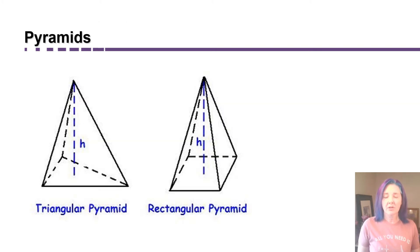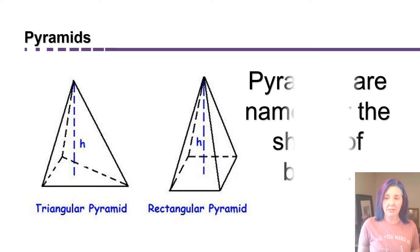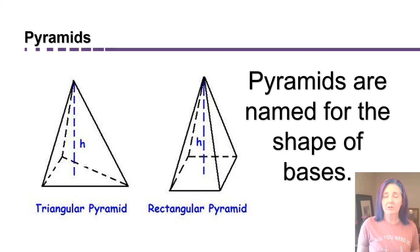But let's start with pyramids. Pyramids come to a point at the top. They're named for the shapes of their bases. So on the left I have a triangular pyramid because the bottom of it is a triangle, and on the right I have a rectangular pyramid because the bottom of it is a rectangle.